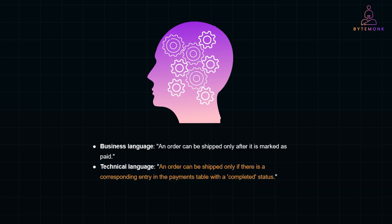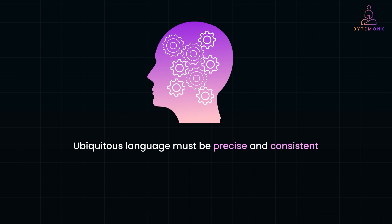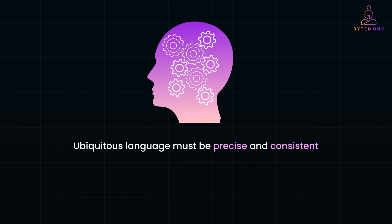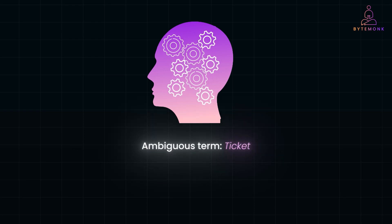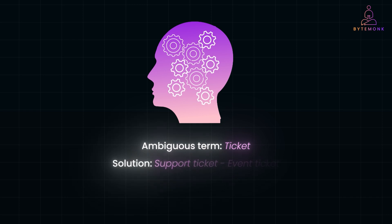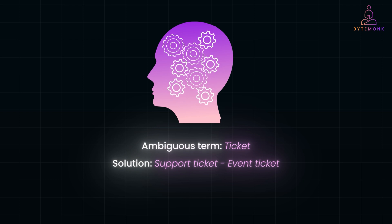Moreover, consistency also matters. The ubiquitous language must be precise and consistent. Each term should have one and only one clear meaning to avoid any ambiguity. For example, the word 'ticket' could mean a support request or an event entry pass. So use specific terms like 'support ticket' for customer issues and 'event ticket' for access passes. This removes ambiguity and makes the context as clear as possible for everyone.